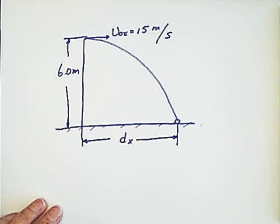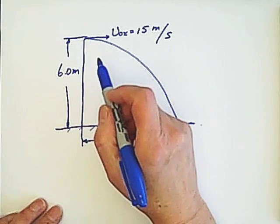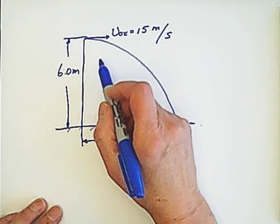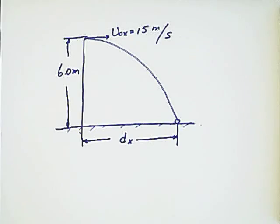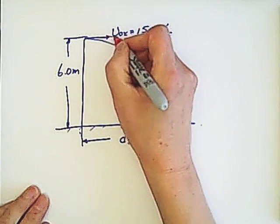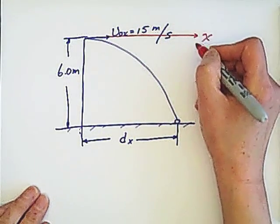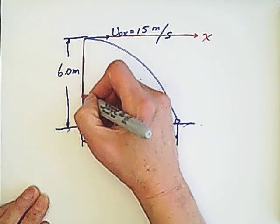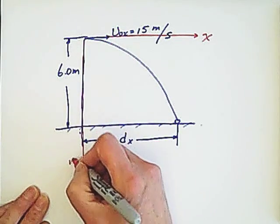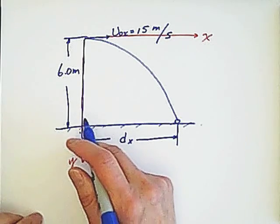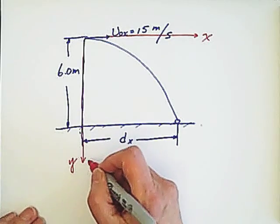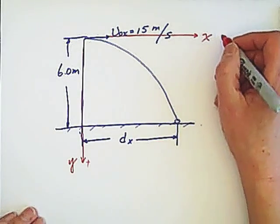The given information is horizontal initial velocity and 6 meters high. But also we know it is the free fall on the vertical. So we still set that x is horizontal, y is vertical. With the y direction, we set the positive, this is positive.